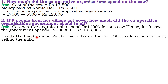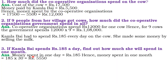Kamla Bai spent Rs. 185 every day on the cow. She made some money by selling the milk. If Kamla Bai spends Rs. 185 a day, find out how much she will spend in one month. We have to multiply Rs. 185 by 30. The amount is Rs. 5,550. You have to do the calculation — keep each and every step.